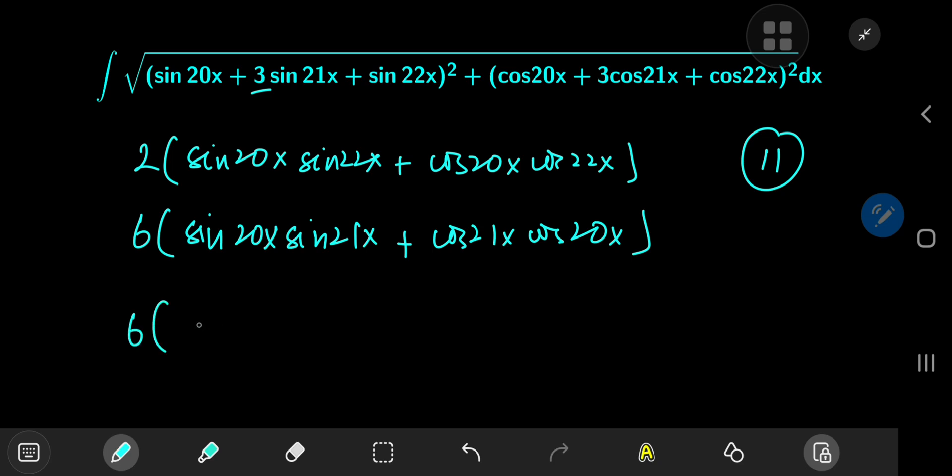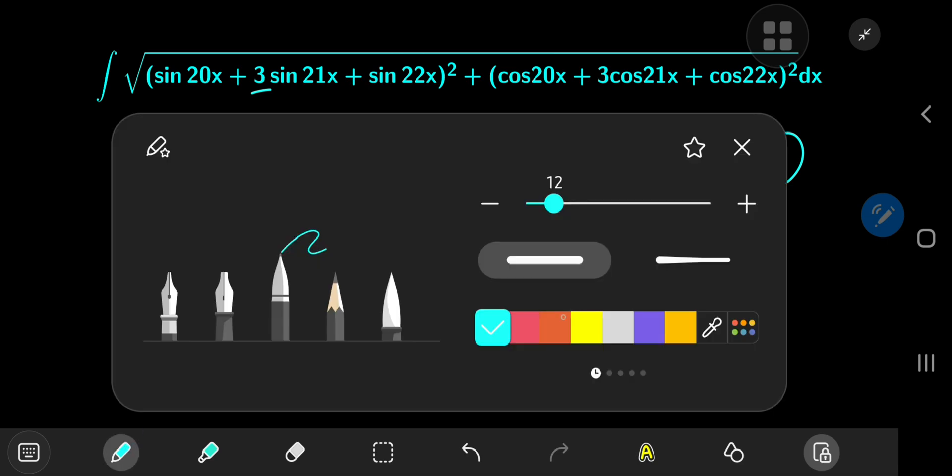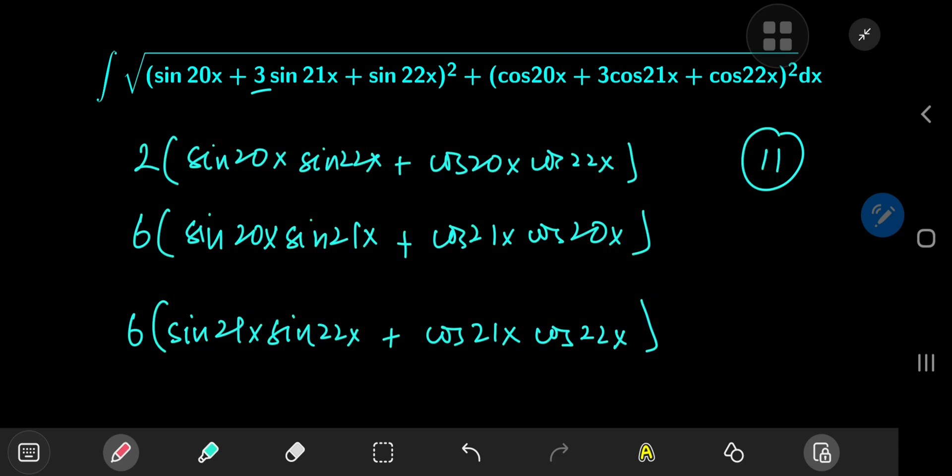And again, you have 6 times the sine of 21x times the sine of 20x and the corresponding product for the cosine as well. And all of these expressions can be simplified using the addition of angles formula for the cosine function.